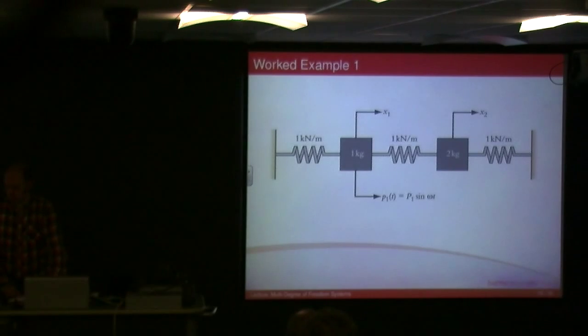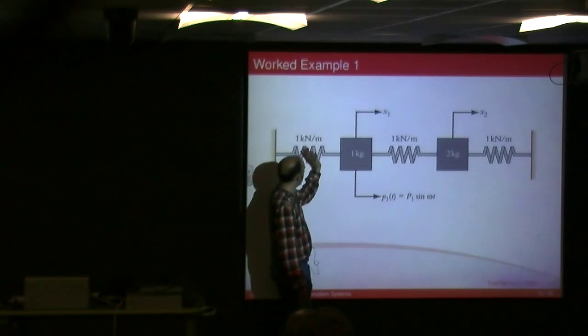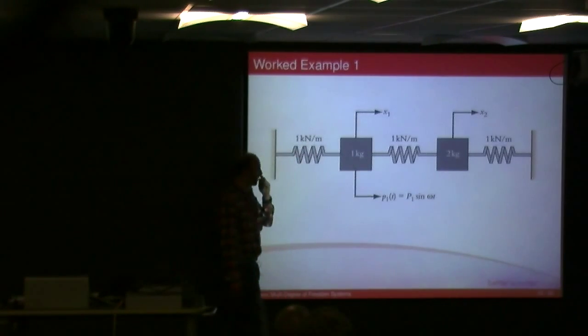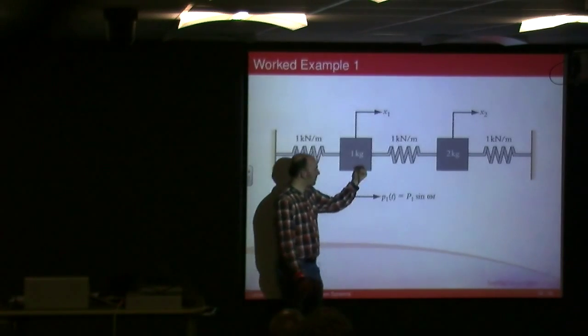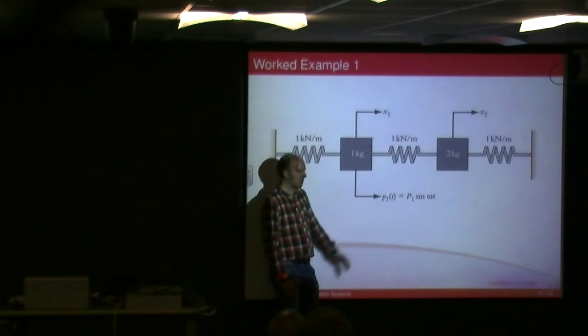So, the first worked example. Here we've got a two degree of freedom system, one kilogram, two kilogram connected by springs, they're all of the same stiffness, one kilonewton per meter, and we have a sinusoidal forcing function applied to this mass. And the question is, what's the response of the system?